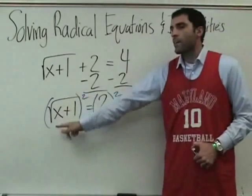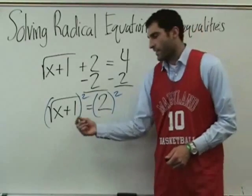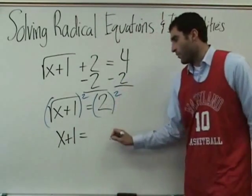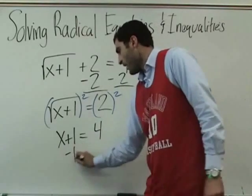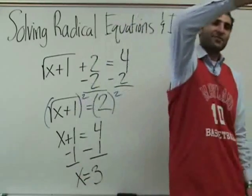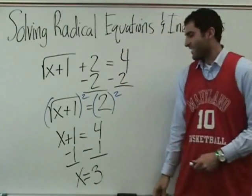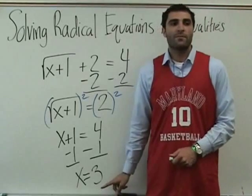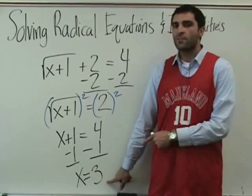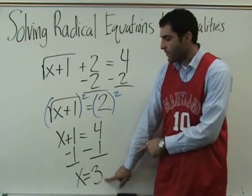So when you square a square root, that cancels the square root, leaving just what here? X plus one. Very nice. Equals two squared is four, and we're one step away. Minus one. X equals three. Yay. Like a little victory. Now keep in mind, with all of these problems, more than most cases, you need to plug these in because we're going to do problems in which sometimes it won't work and sometimes there'll be no solution. So we must plug in to check.